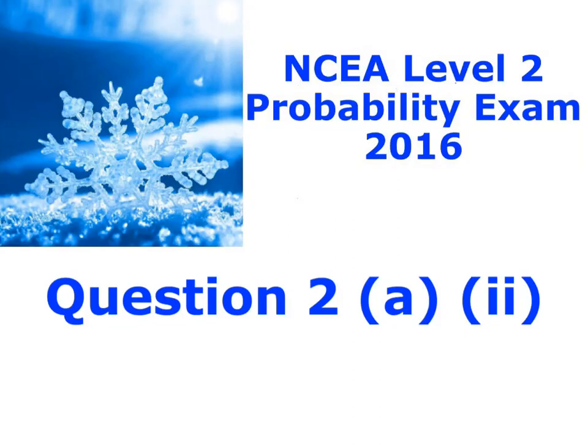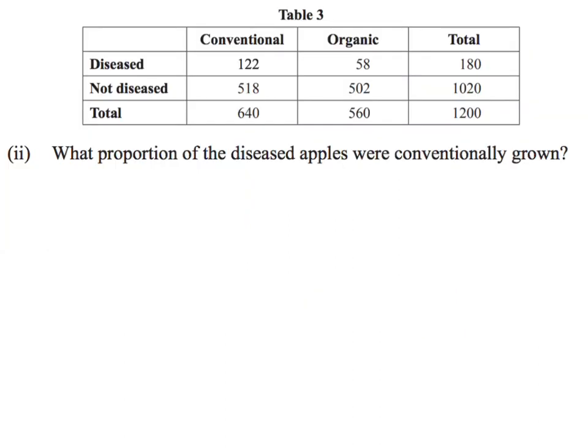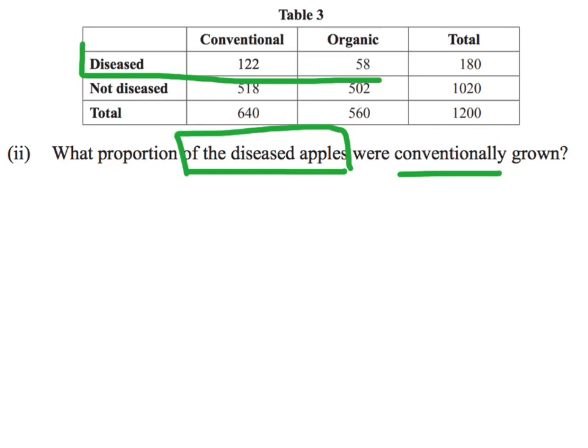Here is question 2a part 2. We've got our table there with information and we're asked for what proportion of the diseased apples were conventionally grown. So here's the key: what proportion of the diseased apples? I'm only interested in the diseased apples. I'm not looking at all of the apples, I'm only interested in the diseased apples.